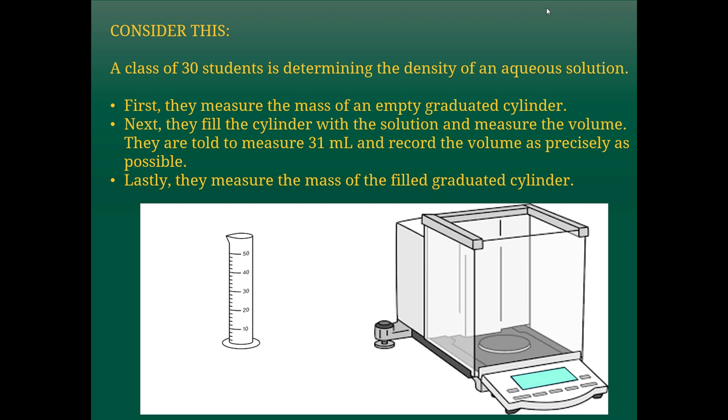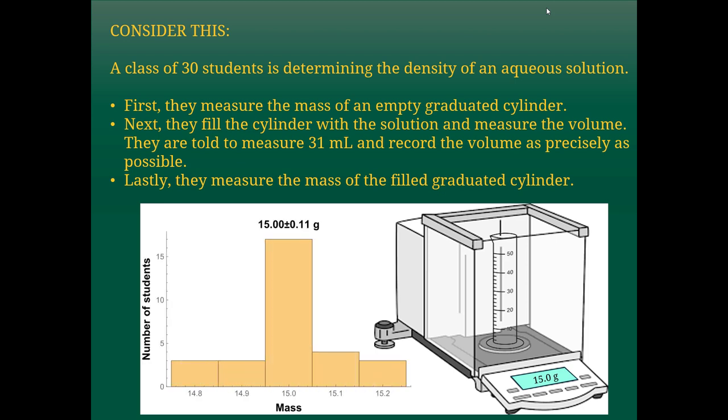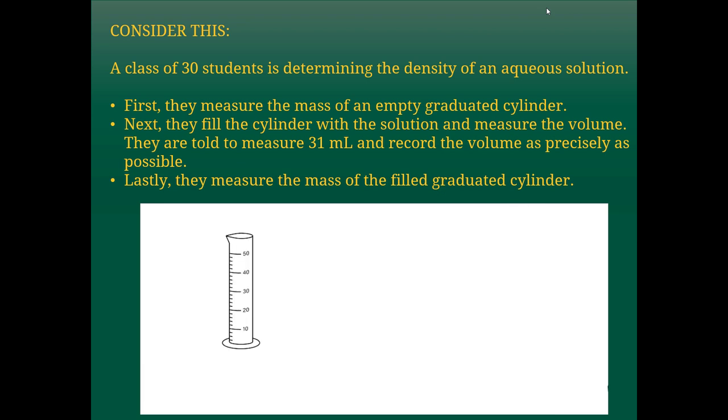So the first thing that happens is the students all have to measure the mass of their empty graduated cylinder, and most of them are going to get around 15.0 grams, but not everyone does because of that wind and because of the random errors that are associated with the measurement. The average is 15.00 plus or minus 0.11. Now, you'll notice that I'm using two decimal places or two sig figs in my standard deviation, and that's because I'm going to use these numbers for calculations later on. If I'm reporting this as a final answer, I'm only reporting to one sig fig, but we'll come back to that later.